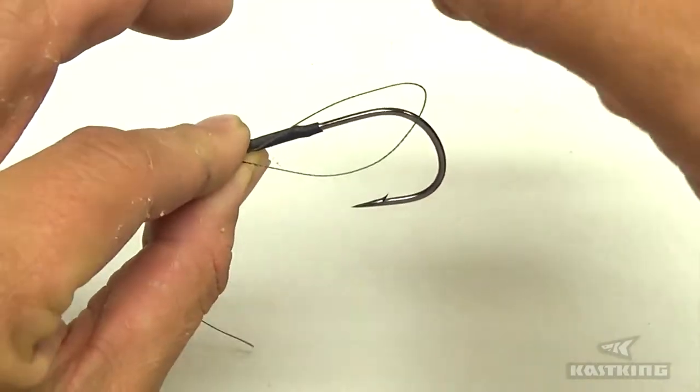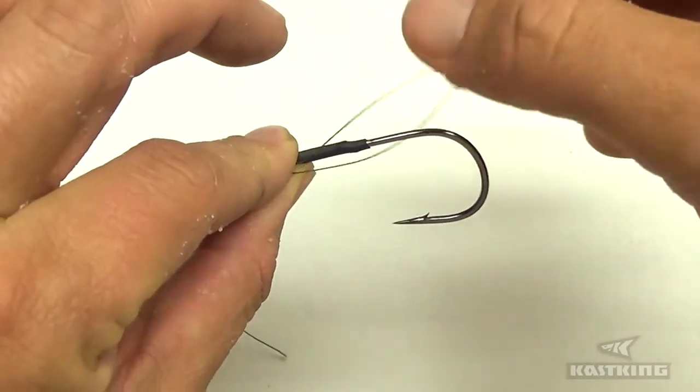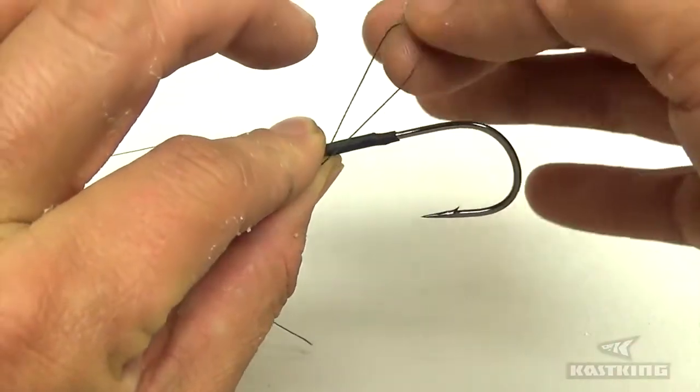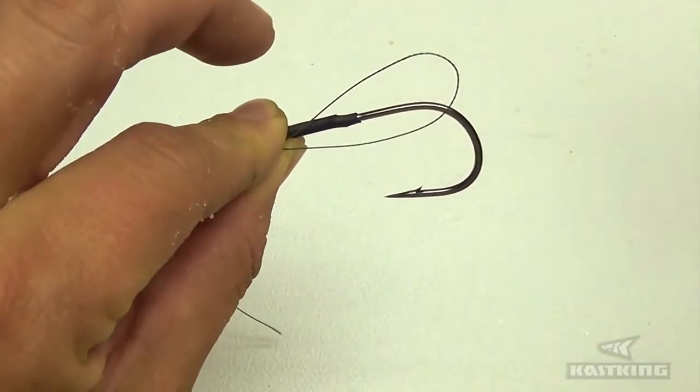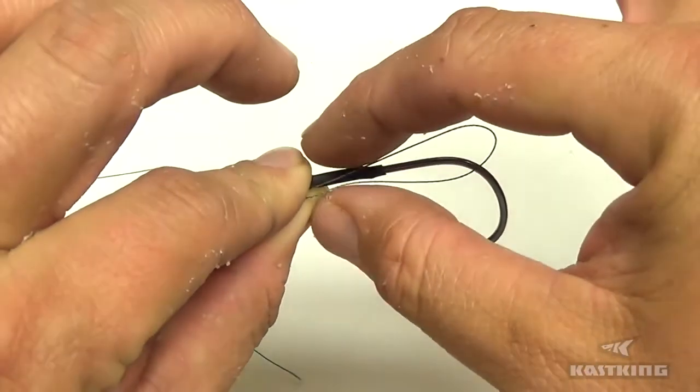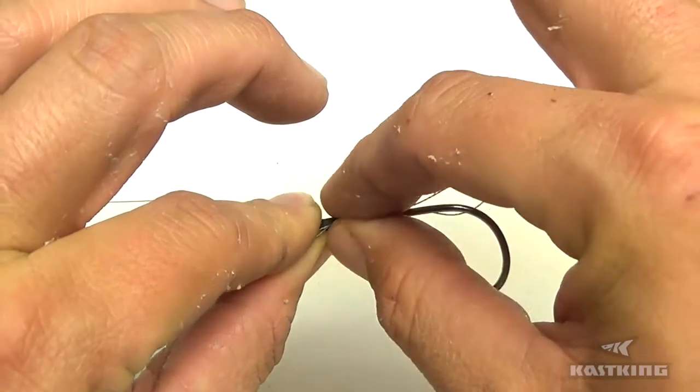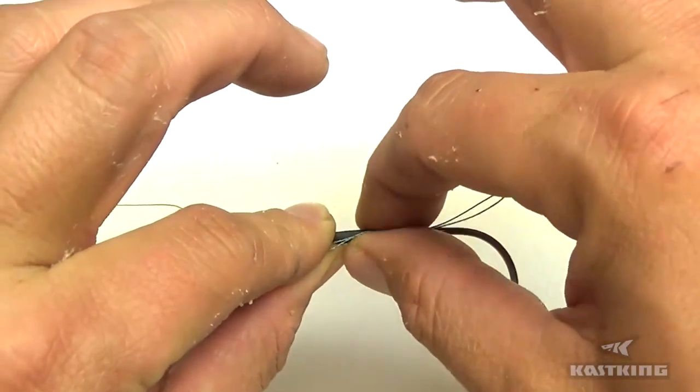So now what you have is a loop right here like this. Try not to get that loop crossed, just keep everything flat next to each other. Then what you're going to do is you're going to pinch it again with your other hand. The line, the braid, and the hook.